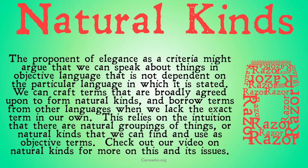Now, the proponent of elegance as a criteria might argue that we can speak about things in objective language that is not dependent on the particular language in which it's stated. We can craft terms that are broadly agreed upon to form natural kinds, and borrow terms from other languages when we lack the exact term in our own. This relies on the intuition that there are natural groupings of things, or natural kinds, that we can find and use in objective terms. I have some questions and issues with this, but check out our video on natural kinds for more on this and my objections.